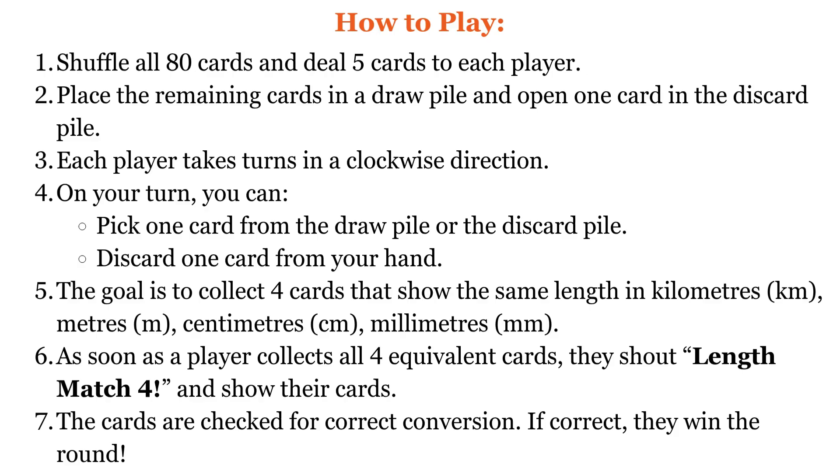Rules to play are: Shuffle all 80 cards well and deal 5 cards to each player. Place the remaining cards as a draw pile and open 1 card in the middle as the discard pile. Players take turns in a clockwise direction. On your turn, you can pick 1 card from the draw pile or the discard pile, then discard 1 card from your hand to the discard pile. The goal is to collect 4 cards that show the same length in different units. As soon as a player collects all 4 equivalent cards, they shout Length Match 4 and show their cards. The cards are checked for correct conversions. If they are correct, the player wins that round.